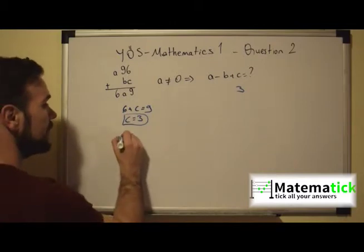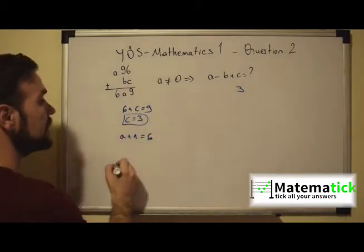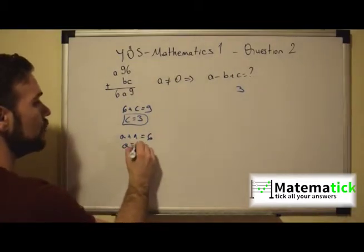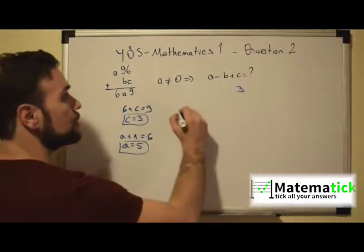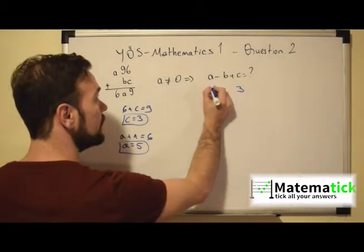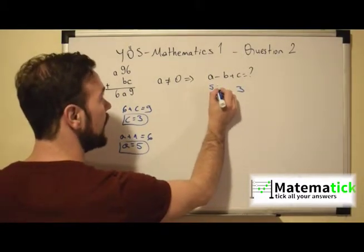And what do we have? A plus 1 is equal to 6, so A is equal to 5. So this is the logic you should follow to get to the right answer. So now we find the value of A which is equal to 5. Now the rest is very easy.